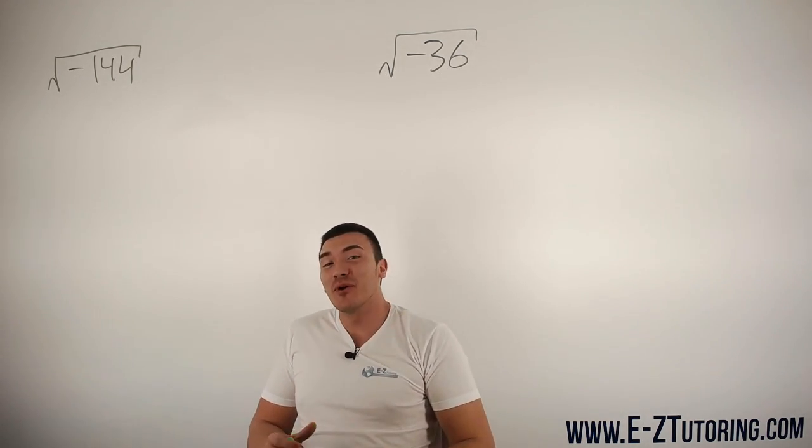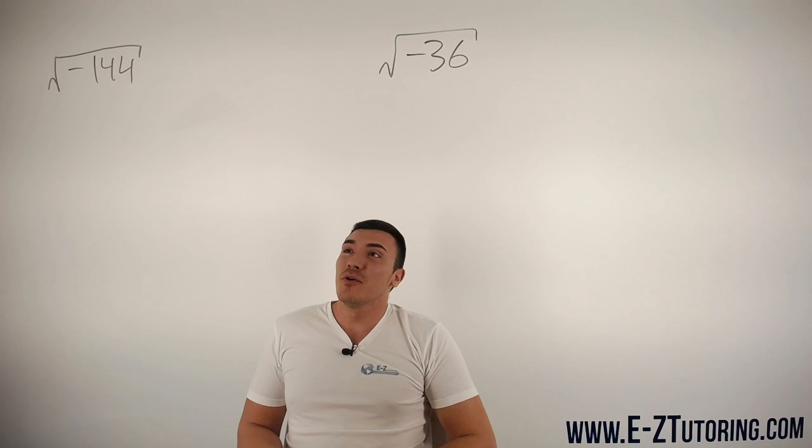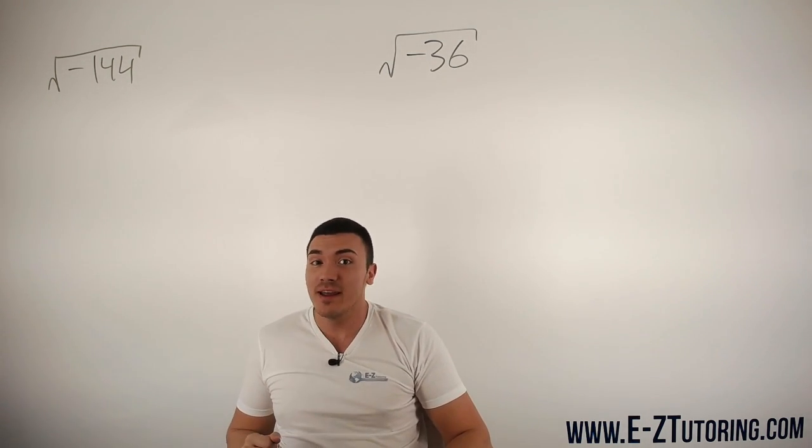Hi and welcome to Easy Tutoring. Today we're going to cover how you can take the square root of a negative number. In this case, we have the square root of negative 144.